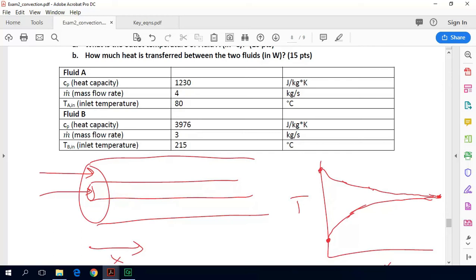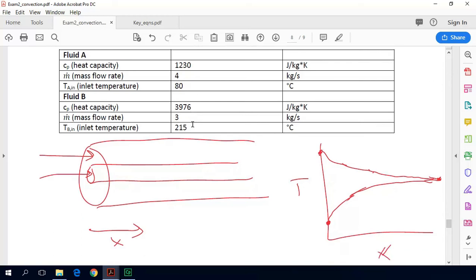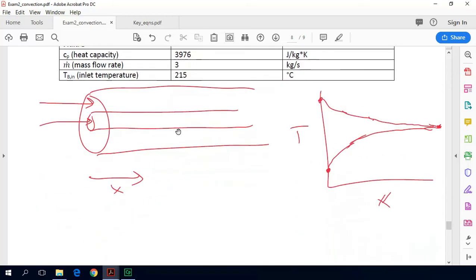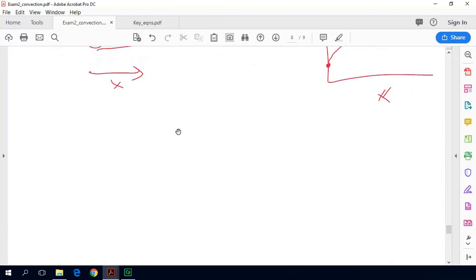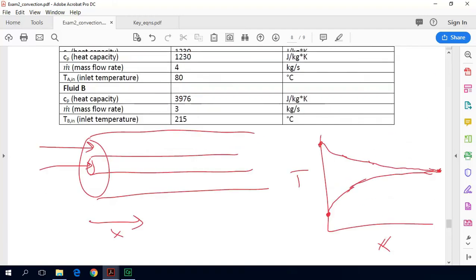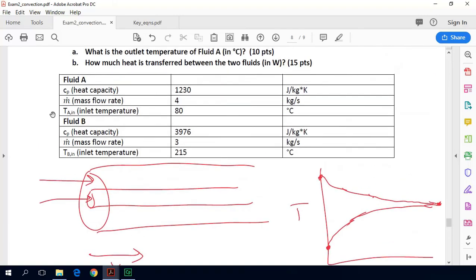So then this becomes a fairly simple energy balance. So we're given the different fluid properties of each fluid, but we can actually set this up as an energy balance. So remember that B is our hotter fluid and A is our colder fluid.